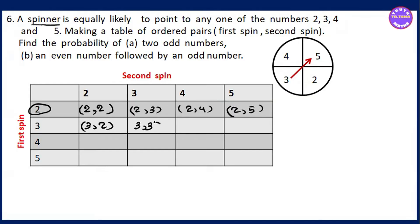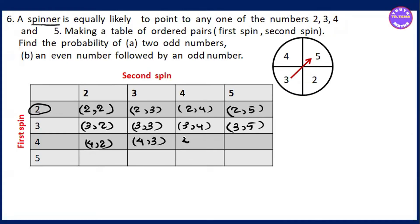The ordered pairs are: 3,3 — 3,4 — 3,5. Then 4,2 — 4,3 — 4,4.